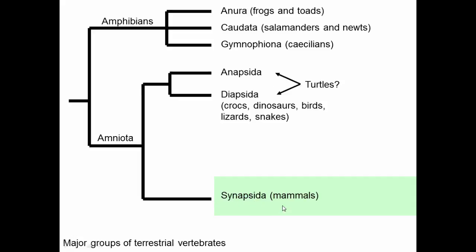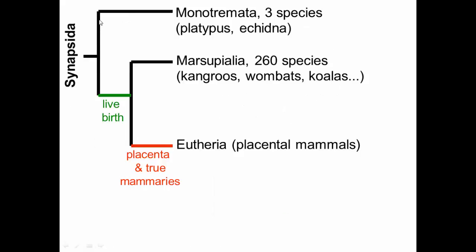Within amniotes, synapsids are the group that evolves into mammals. Within mammals, we have a basal group called monotremes — there are only three species still alive: the platypus and two species of echidna. These are mammals that actually lay eggs, so a synapomorphy for the rest of the mammals is live birth.